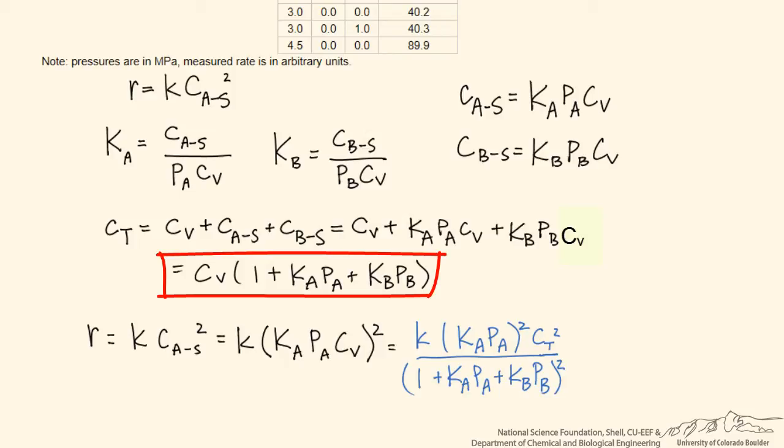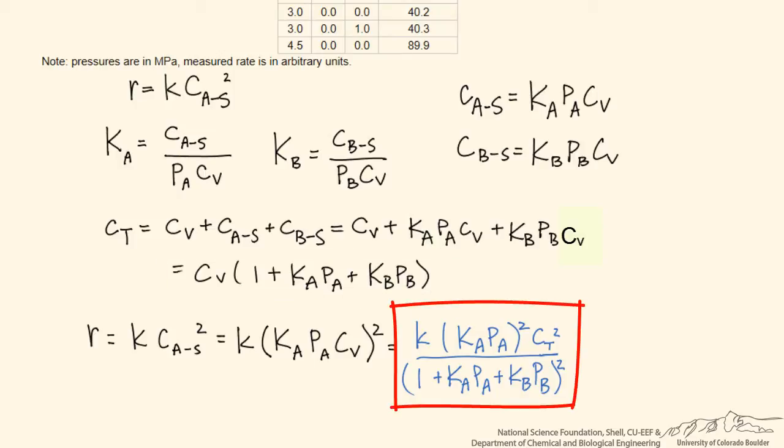Substituting in that expression, we end up with the rate proportional to the partial pressure of A squared in the numerator, with a denominator term corresponding to coverage of different species. The 1 is proportional to vacant sites, KA*PA is proportional to sites containing A, and KB*PB is proportional to sites containing B. Now we want to see how this stacks up compared to our experimental data measured in a differential reactor.